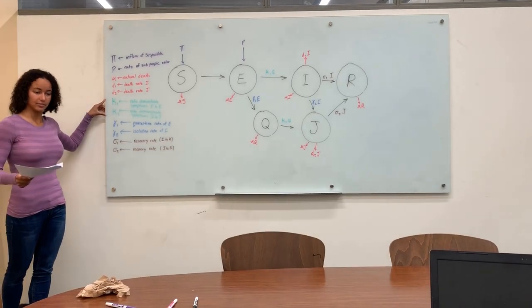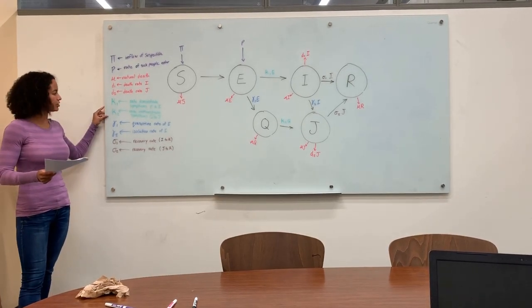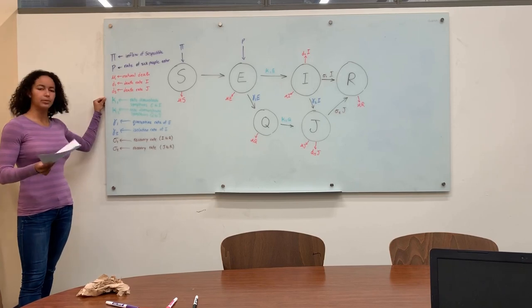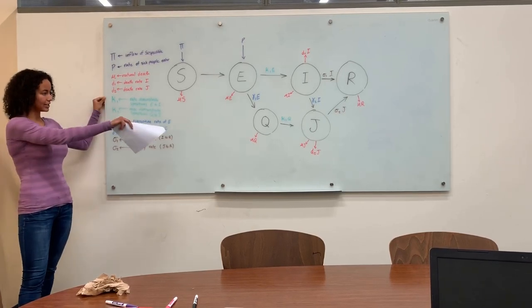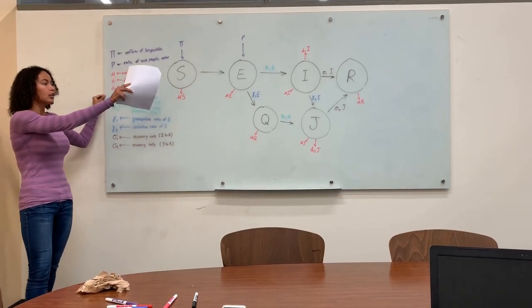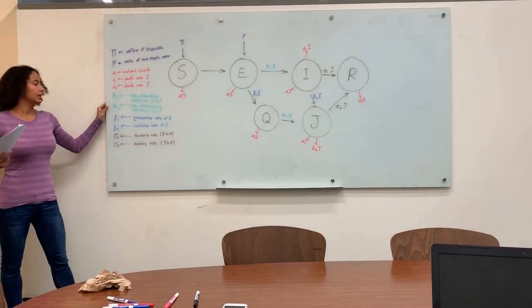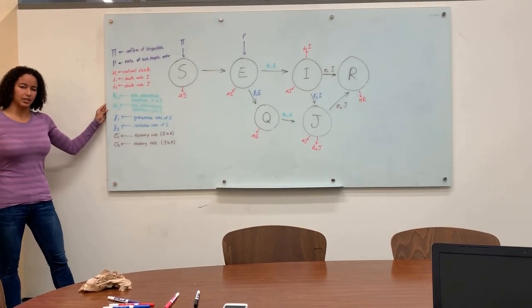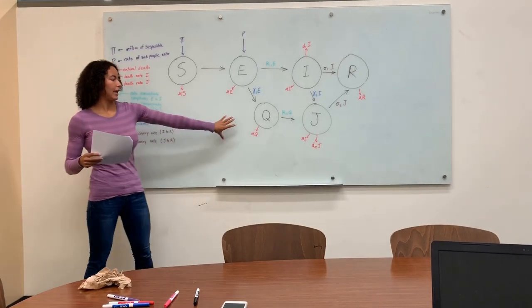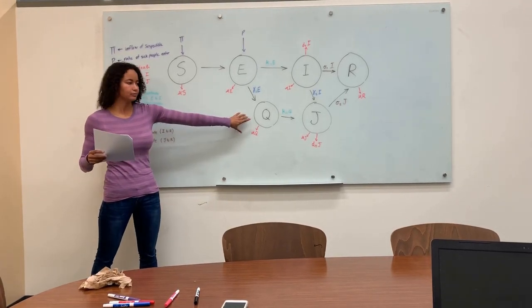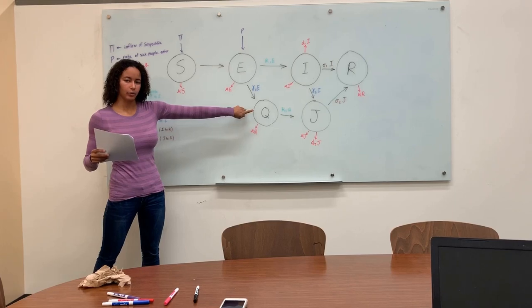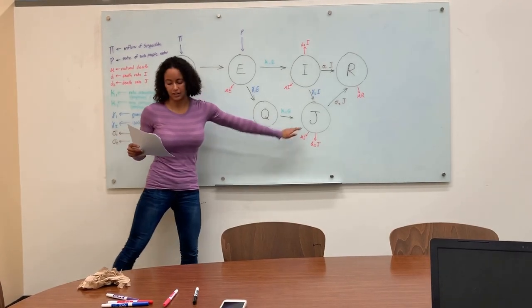Next, we have the people demonstrating symptoms. That's Kappa 1 and Kappa 2. Kappa 1 is people demonstrating symptoms from the asymptomatic group, E, to the symptomatic group, I. Kappa 2 is the rate of demonstrating symptoms while in a control environment, meaning going from quarantine to isolation.